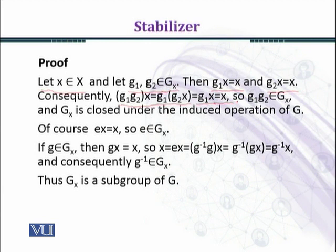So g1g2 belongs to GX. We have two arbitrary elements g1 and g2 in GX, and their multiplication g1g2 belongs to GX because (g1g2)x equals x. So the closure property is satisfied. We can say that GX is closed under the induced operation of G.